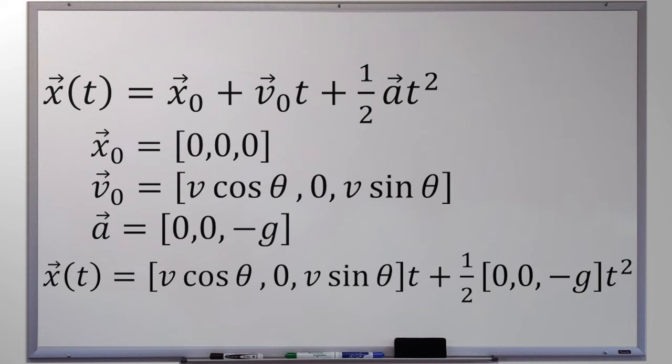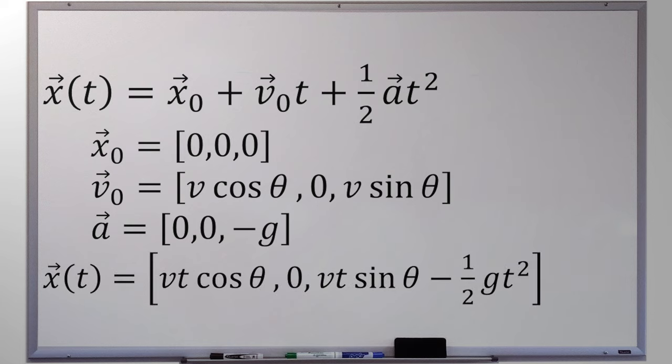Now we can write our equation of motion. The cannonball's position over time is (v·cosθ, 0, v·sinθ) times t, plus one-half of (0, 0, −g) times t squared. Packaging this into a single vector, the position vector as a function of time is: v·t·cosθ in x, 0 in y, and v·t·sinθ minus one-half g·t² in z.